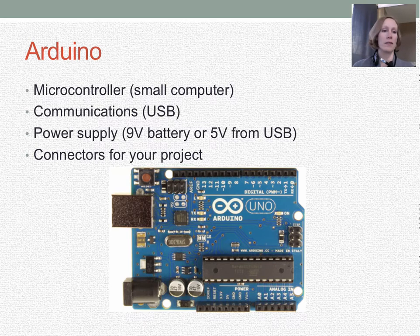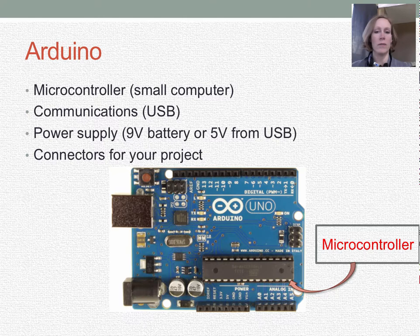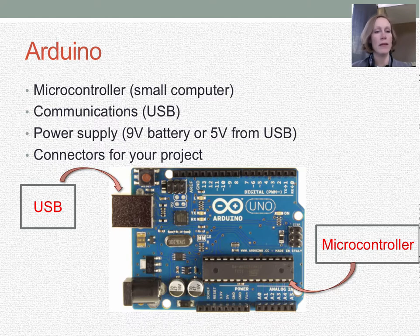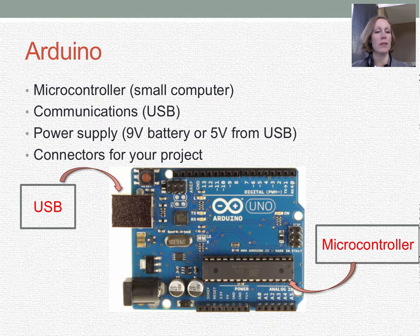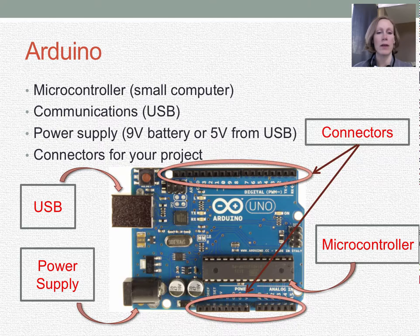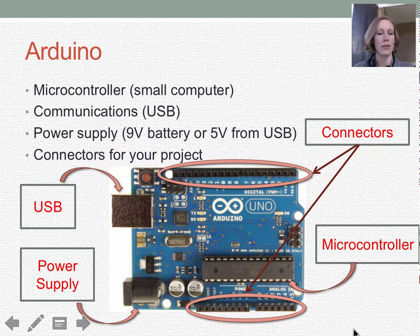What is an Arduino? Basically it's just a small computer, also called a microcontroller, located right here on this diagram — that chip is the microcontroller. The rest of the things on the board are the way that we communicate to and from the microcontroller. We have a USB connection that lets the Arduino communicate to the computer, so we can put programs onto the microcontroller. It also powers the microcontroller. We can also get a nine volt supply from a battery or five volts from USB. The remaining pins are the input and output connectors we'll use for the project.